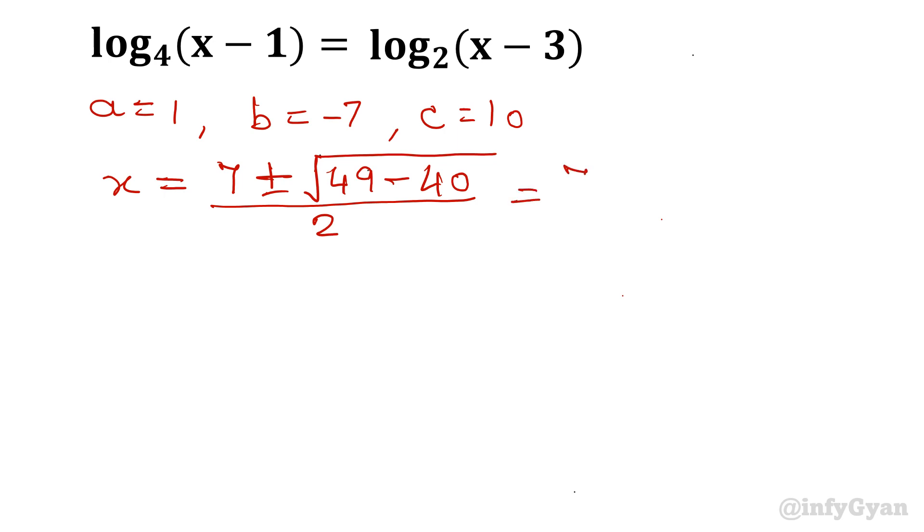This becomes (7 ± √9) / 2 = (7 ± 3) / 2. Taking the plus sign gives 10/2 = 5. Taking the minus sign gives 4/2 = 2.